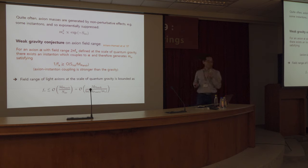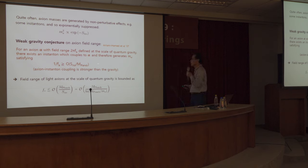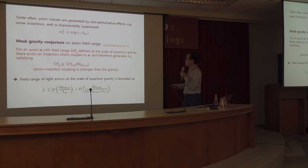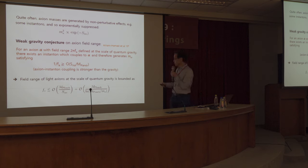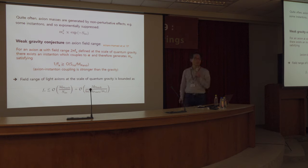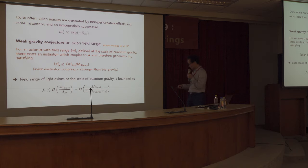This is a conjecture based on certain string physics that I'm not going to discuss here. If you simply take this inequality, it means that the field range of axions, defined at the scale of quantum gravity, is bounded by this combination. Once you use this correspondence between axion mass and instanton action, then f_a is bounded by M_Planck divided by the log of the axion mass — with some model-dependent factor of order one. This is the consequence of the swampland conjecture.